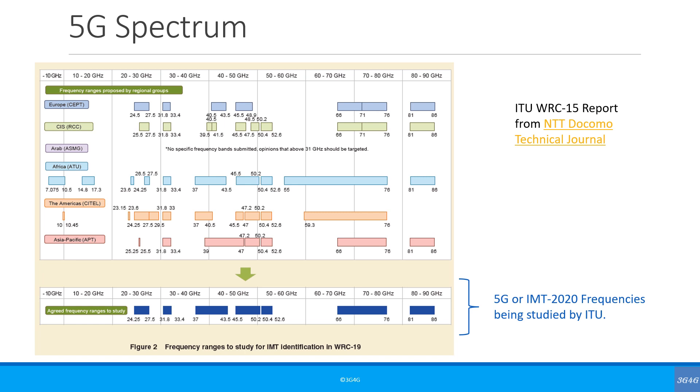Now, coming back to this picture, in the World Radio Conference 2015, also known as WRC 15, each region proposed frequencies above 6 GHz they wanted to study for 5G. So, if you see Africa, for example, they wanted the ITU to allow 7.075 GHz to 10.5 GHz to be studied for 5G suitability. Similarly, the Americas wanted to study 10 to 10.45 GHz for 5G suitability. As you can see, there are a lot of proposals and WRC looks at frequency for everything, including baby monitors, wireless microphones, satellites, etc.